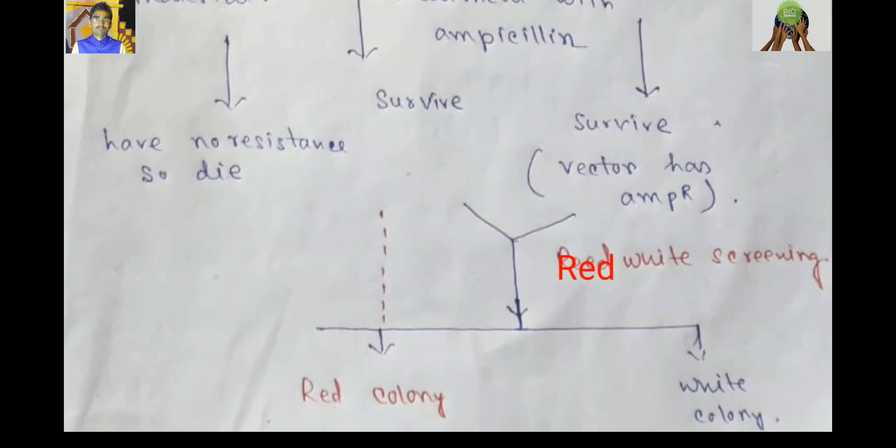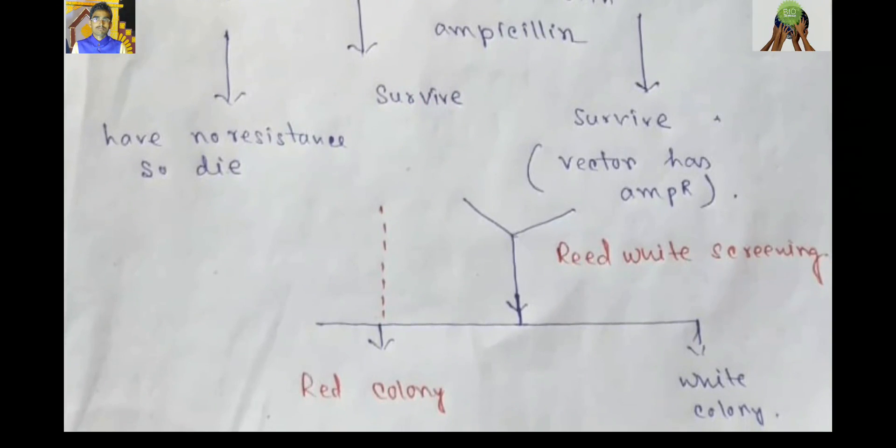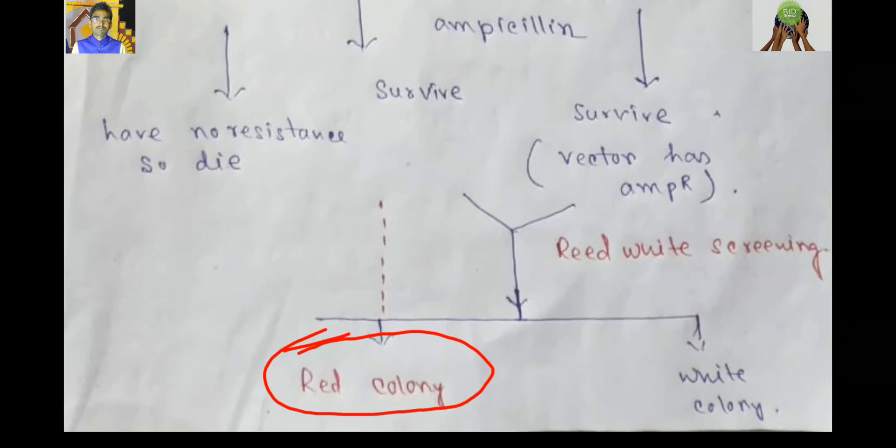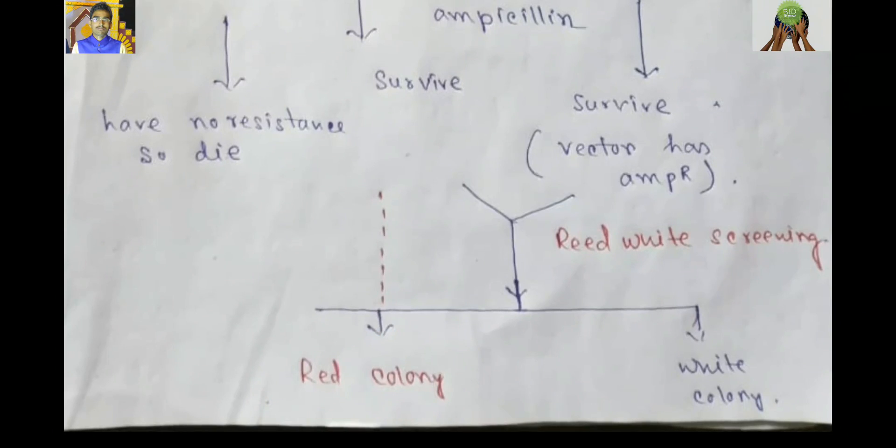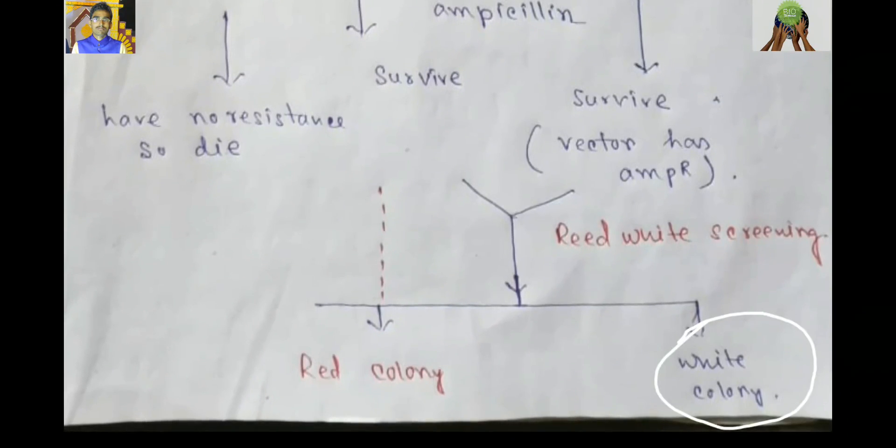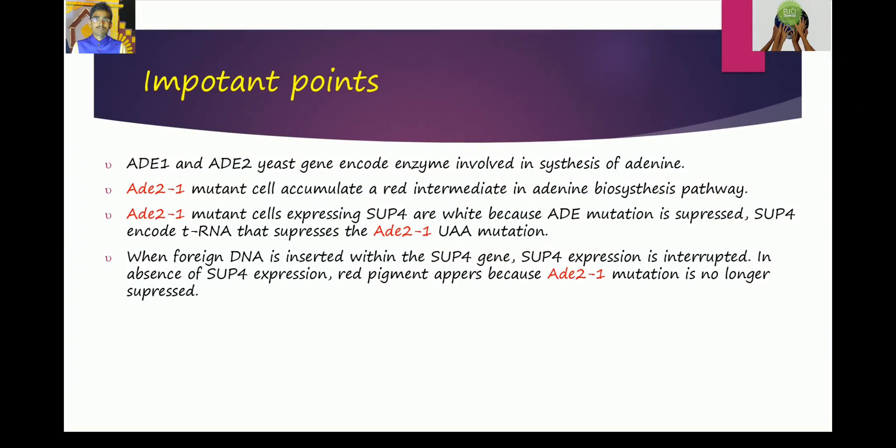So, the host cell with recombinant DNA produce red colony. And the host cell that contain only plasmid vector produce white colony.